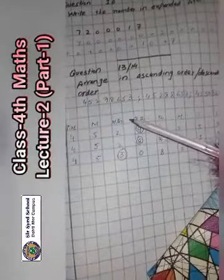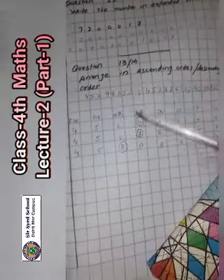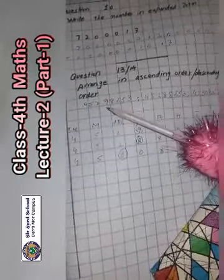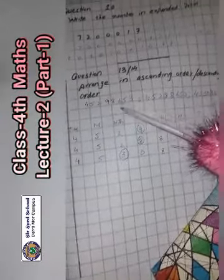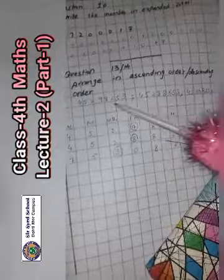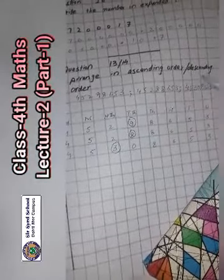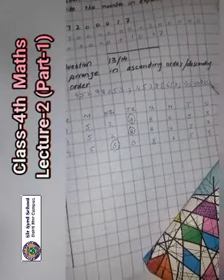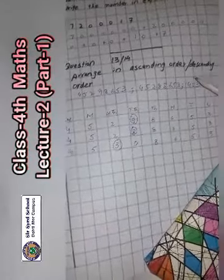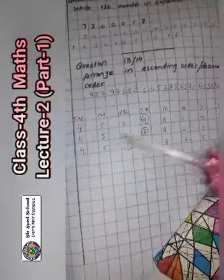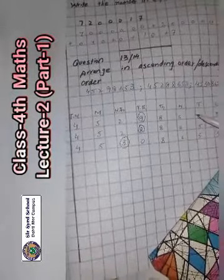For example, here we have three values given: first value, then a comma, next value, and last value before the comma. In this case, we have written three values with the help of the value chart.